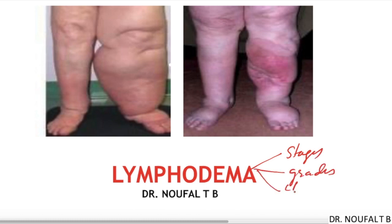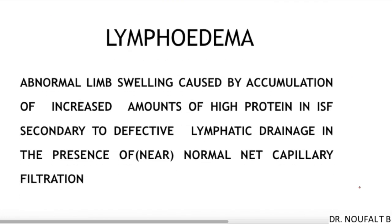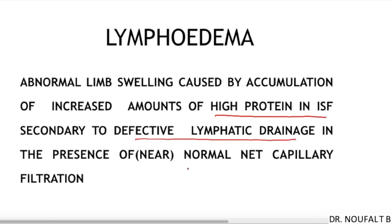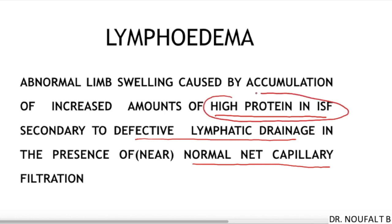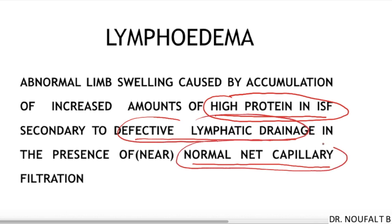Lymphedema is defined as abnormal lymph swelling caused by accumulation of increased amounts of high protein-rich fluid in the interstitial space, secondary to defective lymphatic drainage, in the presence of normal net capillary filtration.